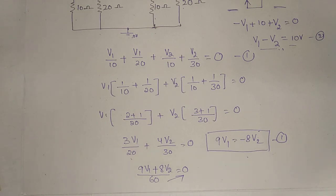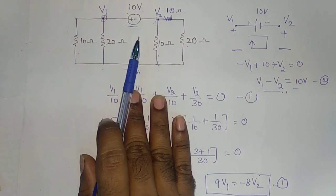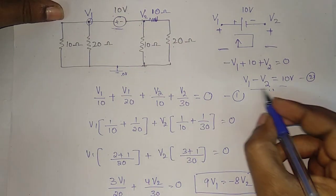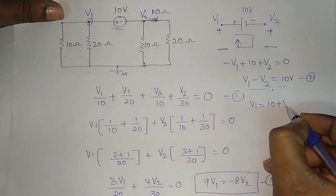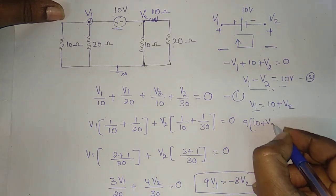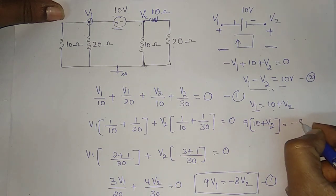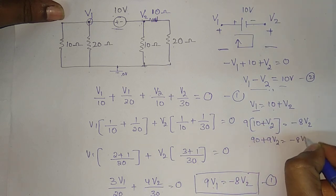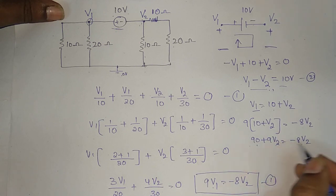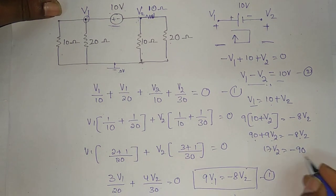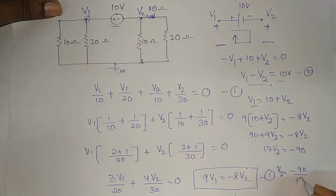We will solve these two equations. From the second equation, V1 is equal to 10 plus V2. Substituting this V1 value into the first equation: 9 times (10 plus V2) equals minus 8V2. So 90 plus 9V2 equals minus 8V2, giving 17V2 equal to minus 90. Therefore V2 equals minus 90 by 17.